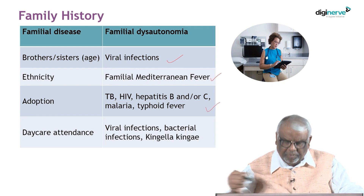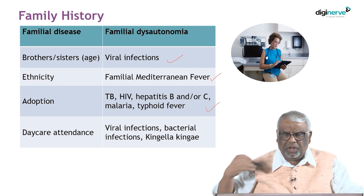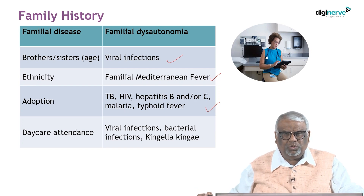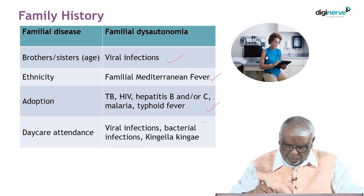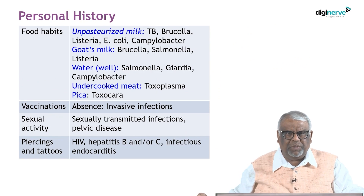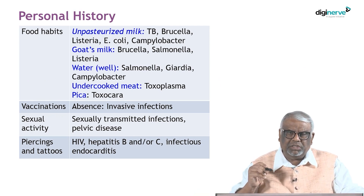In adopted children, tuberculosis, HIV, and Hepatitis B or C could have been transmitted before the adoption from other settings. Children who attend daycare are more prone to viral infections. Food habits are important in the personal history — those who consume unpasteurized milk are at higher risk for Tuberculosis, Brucella, Listeria, E. coli, and Campylobacter infections.